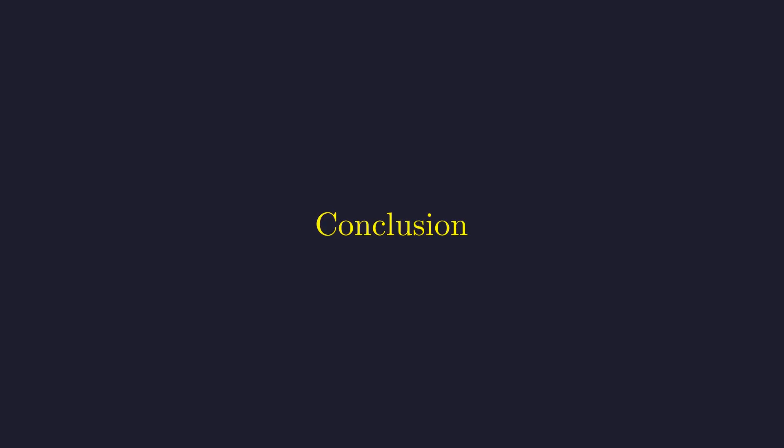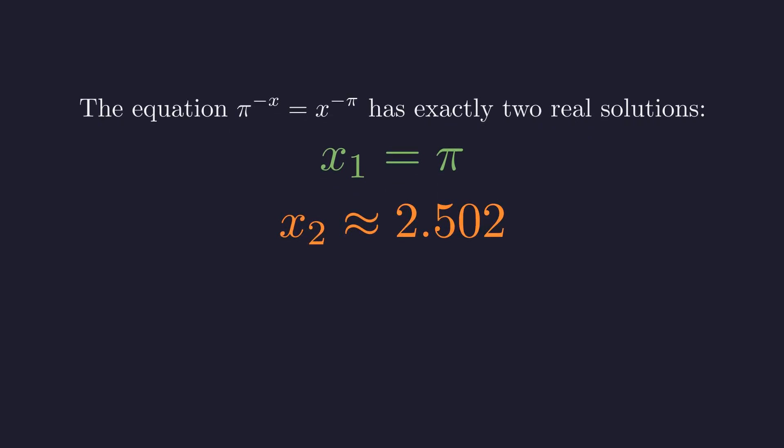Let's bring it all together. So here's what we've discovered: the original equation π to the negative x equals x to the negative π has exactly two real solutions. The first one is elegant and symmetric: x equals π. We found this just by inspection. The second solution is more mysterious—approximately 2.502. We proved it exists using calculus and the shape of our function. Then we calculated its value using Newton's method. Two completely different solutions to the same equation: one obvious, one hidden.